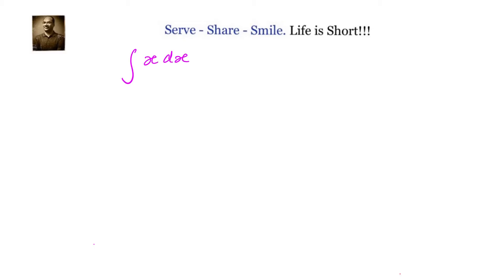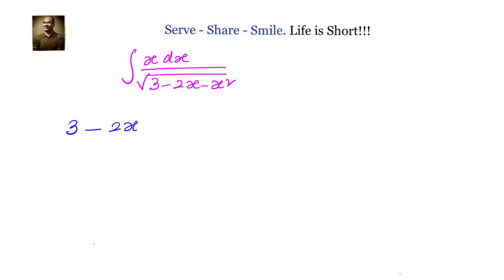Find the integral of x divided by square root of 3 minus 2x minus x squared. In the denominator, we see square root of 3 minus 2x minus x squared, and x squared has a negative sign. This means it can be brought into the form of square root of a squared minus x squared.